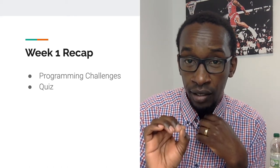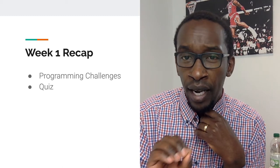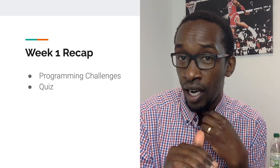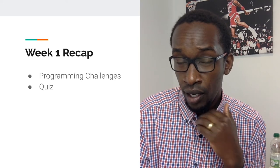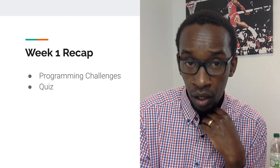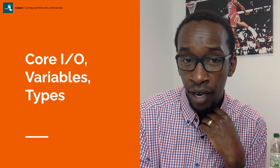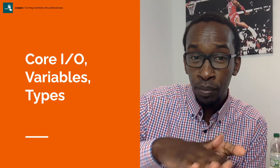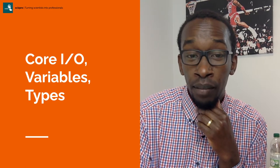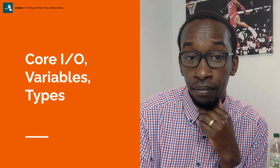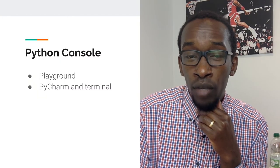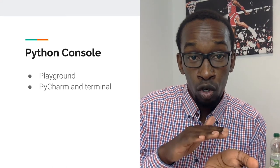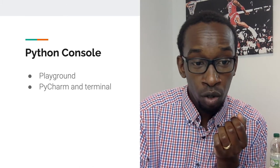That's a quick recap. I might post a video where I look at some questions where students had a hard time and give a clue on how to do those. Now let's get started with core IO, variables, and types — the most basic things you need to know. Once you know this, you can actually write a bare-bones Python program. One of the tools I think is really powerful is the Python console — let me show you what it looks like.